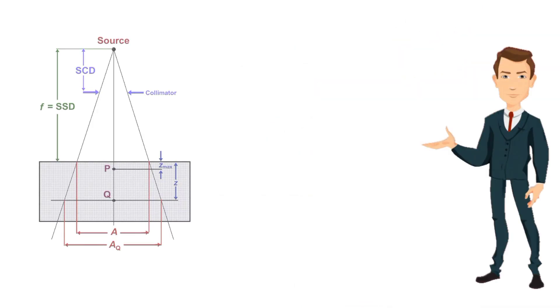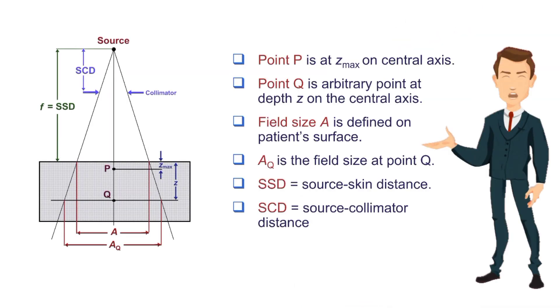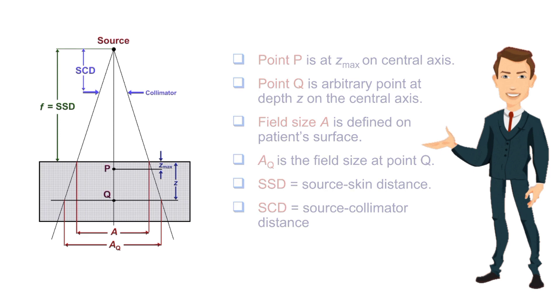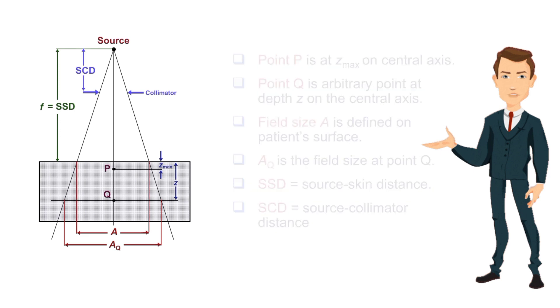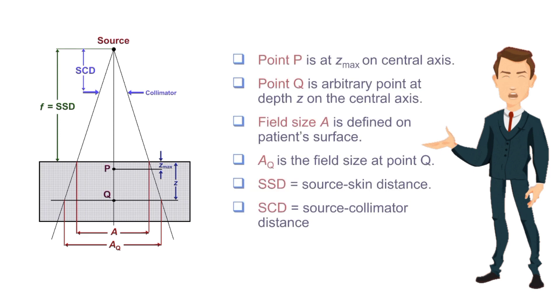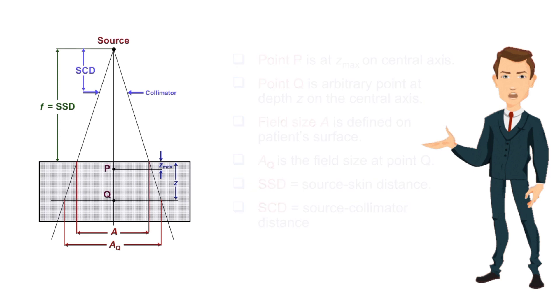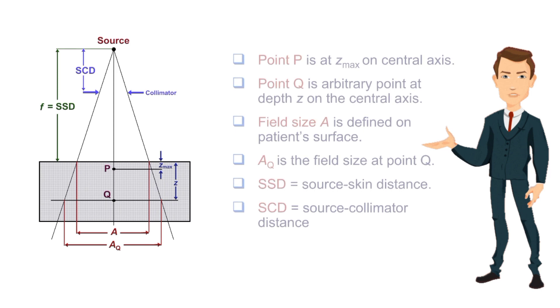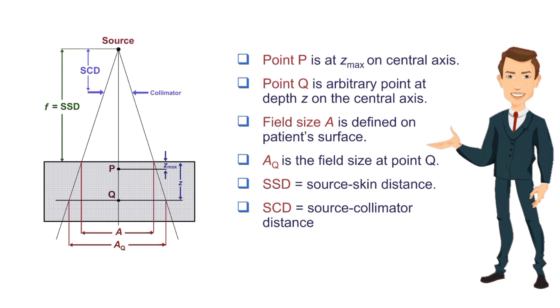In this ray diagram, the key elements are: point P, point Q, field size A at the surface, field size AQ at depth, SSD, and SCD.